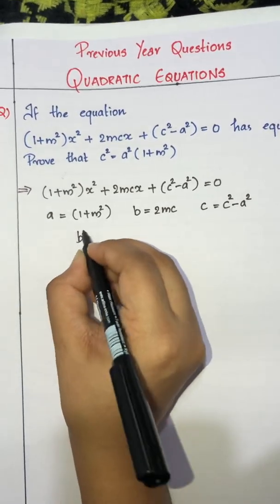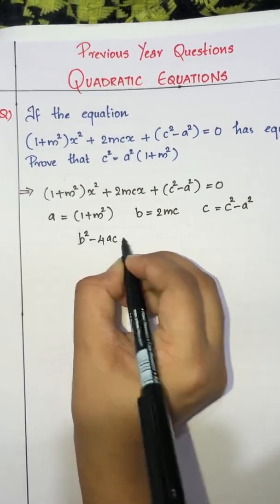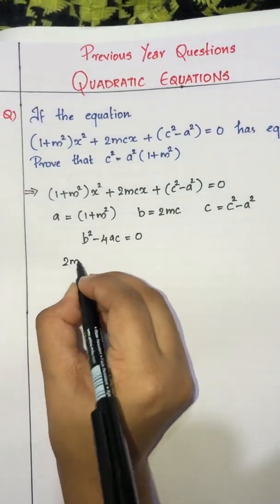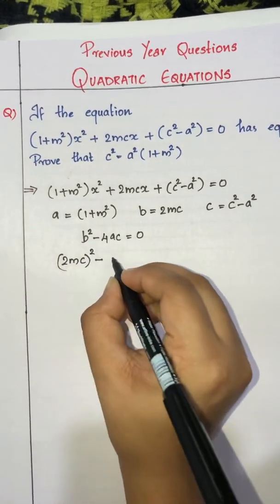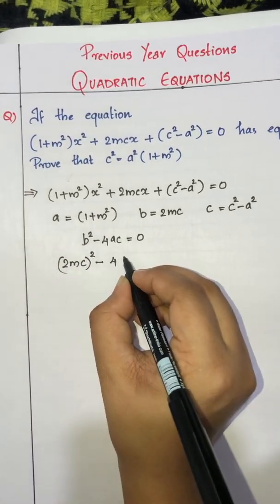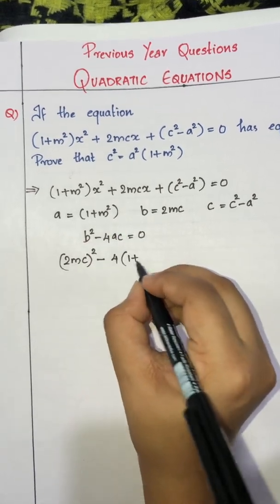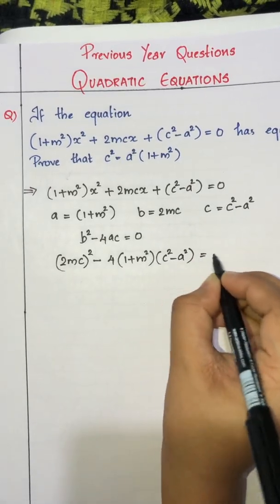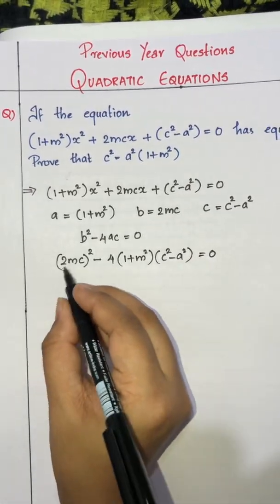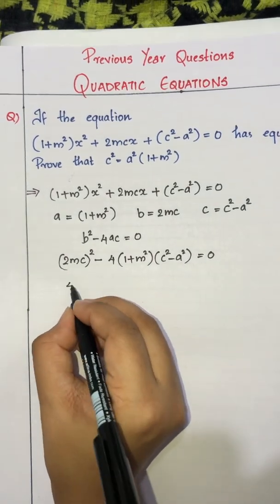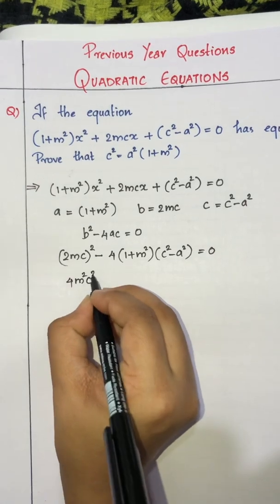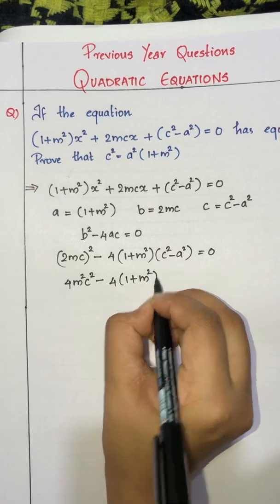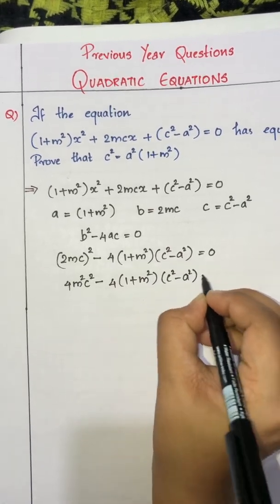Since it has equal roots, b² - 4ac = 0. Substituting, we get: (2mc)² - 4(1 + m²)(c² - a²) = 0, which gives 4m²c² - 4(1 + m²)(c² - a²) = 0.